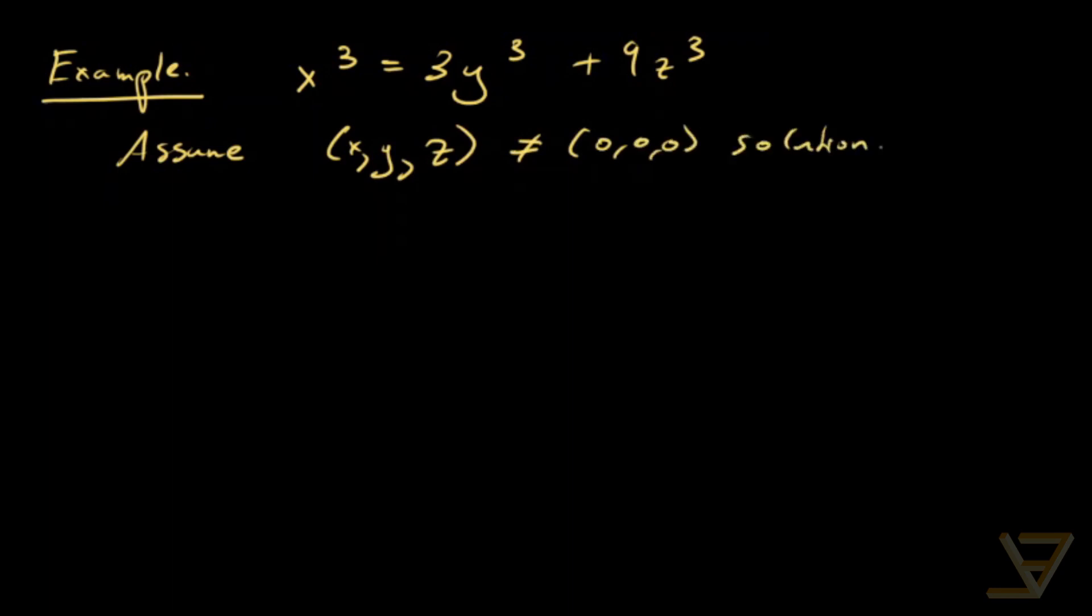So right from the get-go, we can see that 3 divides both sides. So 3 divides x. So we'll let x equal 3x_0.